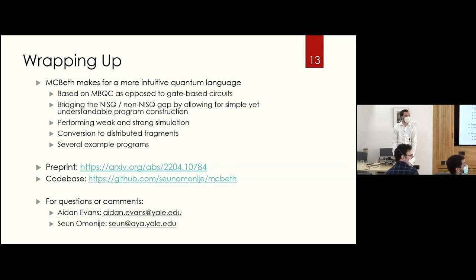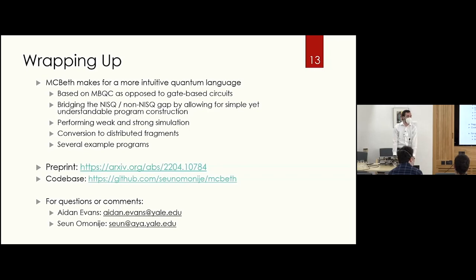Question: I'm confused about the J operator — are you assuming every measurement gives the undesired outcome, since you always apply a correction? Response: I should have specified that the corrections are dependent — in some cases you may not actually perform the correction, since it depends on the measurement outcome.